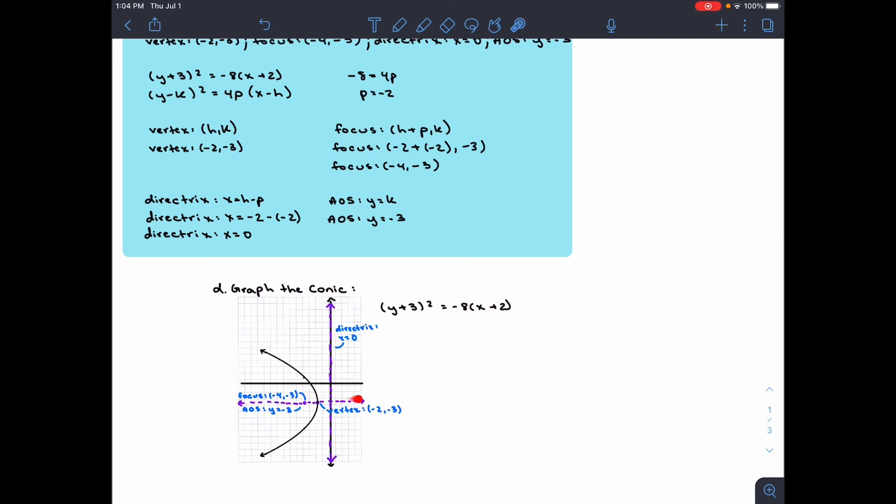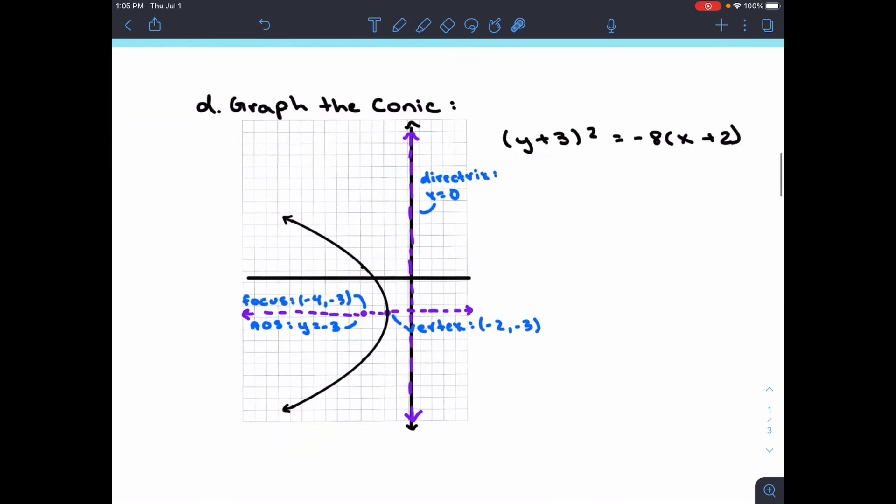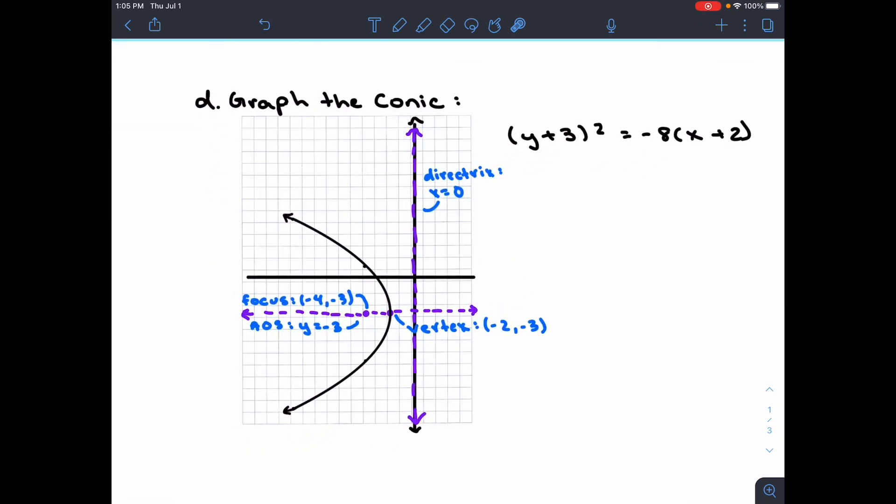For the axis of symmetry, we know that y = k. We know that k = -3 based on the vertex, and we can graph this. That is our graph for this equation.